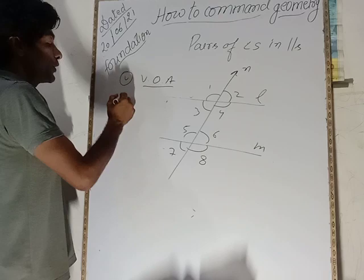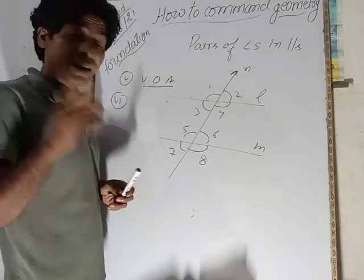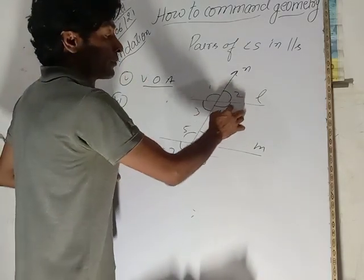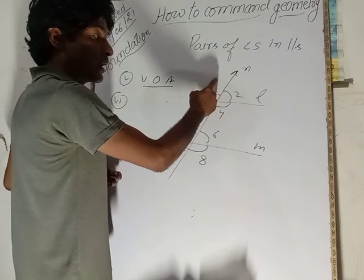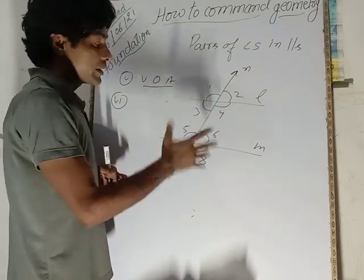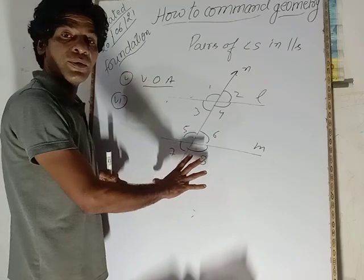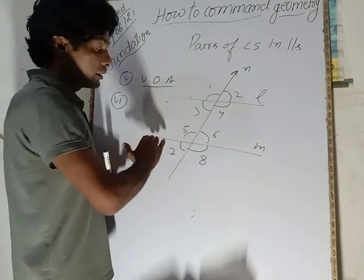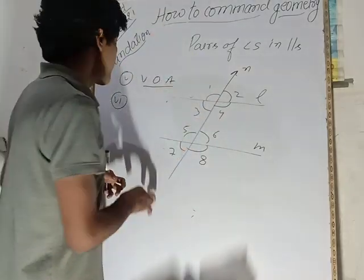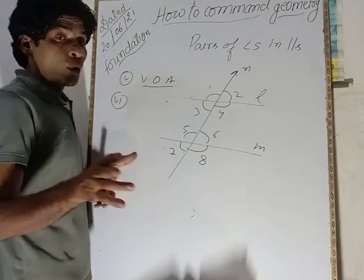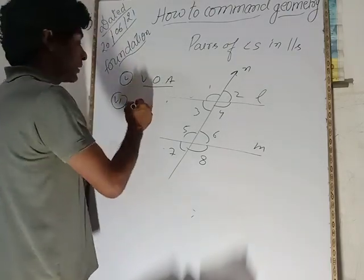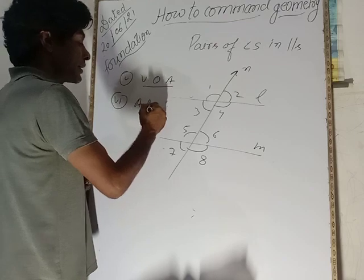The sixth pair is adjacent angles. Adjacent pairs include: angle 2 and angle 1, angle 1 and angle 3, angle 3 and angle 4, and angle 4 and angle 2 — four pairs at each intersection. These are adjacent pairs.